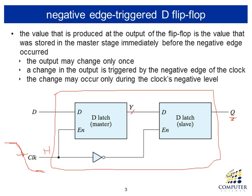When the clock goes down, because of the inverter, the second latch is now enabled. As the clock passes the threshold and goes low enough, the second latch is enabled so that whatever value was latched on D appears on Q. The clock continues going down to the low level, and then the entire device stabilizes. The output does not change.